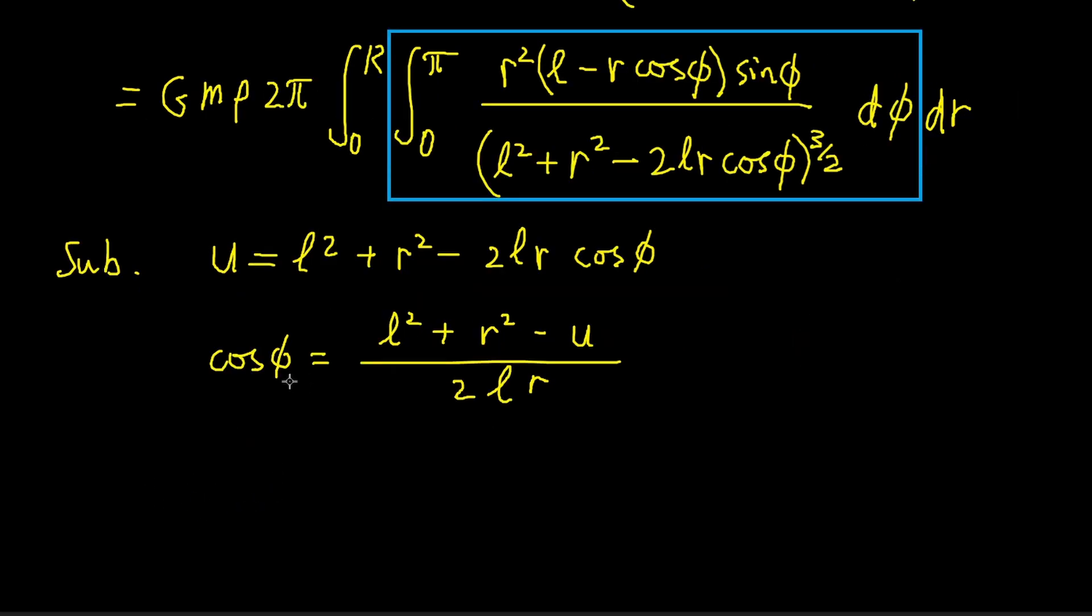We have cos φ in terms of u, that is L² + r² - u divided by 2Lr. Taking differential on both sides of the substitution, and we get du equals 2Lr sin φ dφ.